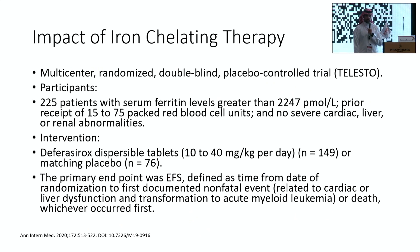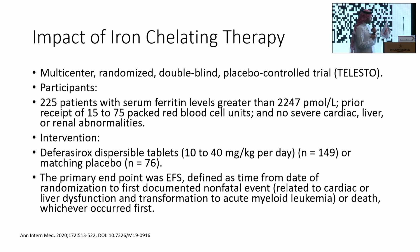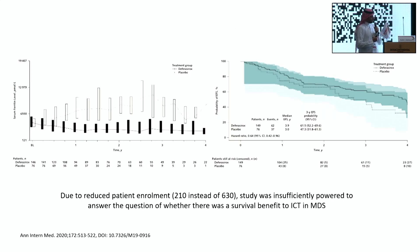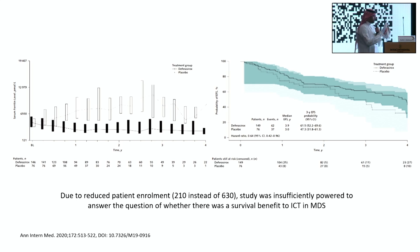The use of chelating agents is important for transfusion-dependent patients, but there is no really strong data to support the use of these agents. However, a recent randomized trial enrolled transfusion-dependent patients comparing deferasirox versus placebo. The primary endpoint was event-free survival defined by time to the first non-fatal event — including cardiac dysfunction, liver dysfunction, acute leukemia transformation, and death. This study showed clearly that deferasirox was able to reduce ferritin levels over the years, and after a good median follow-up there was an improvement in EFS, though overall survival could not be demonstrated due to poor trial accrual.